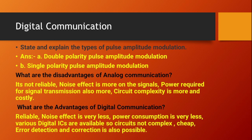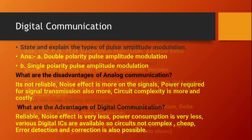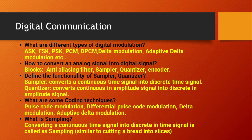The disadvantages of analog communication are: it's not reliable, noise effect is more on the signals, power required for signal transmission is also more, and circuit complexity is more and costly. The advantages of digital communication are: it is more reliable, noise effect is very less, power consumption is very less, various digital ICs are available so the circuit is not complex, and error detection and correction is also possible.